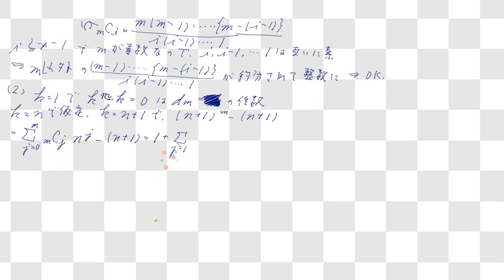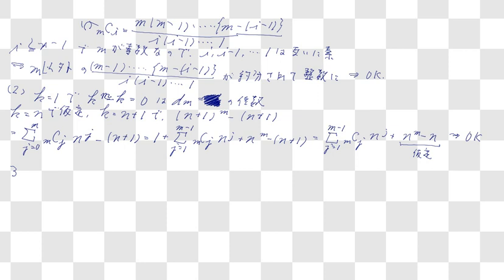そうすると、M-1の形にしてやると、1がまず出てきます。中身のところ変わらず、NのM乗のところが外にもう一つ出てきますね。Nプラス1をそのまま移項してやります。すると、1がキャンセルされて、2つの部分に分けることができます。こういう形ですね。NのM乗マイナスNのところと、2項定理の部分です。